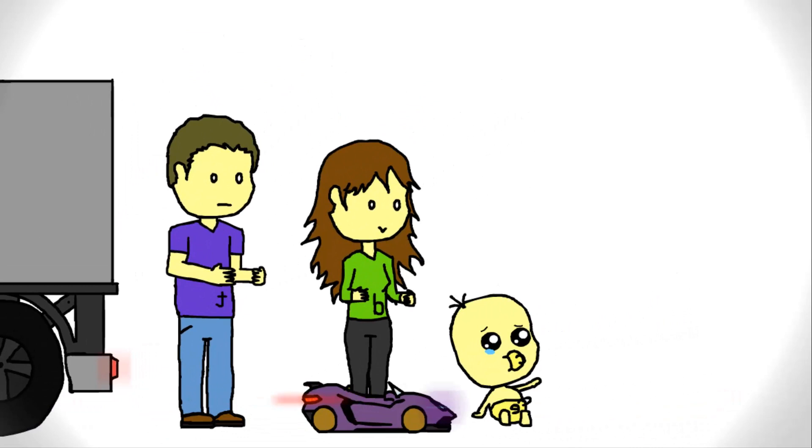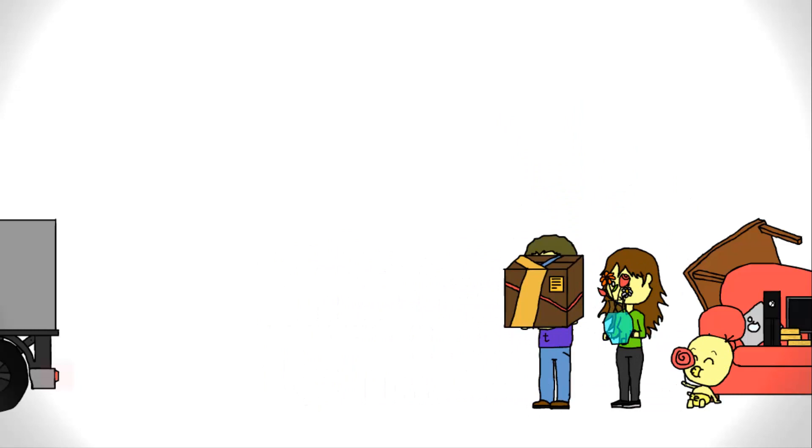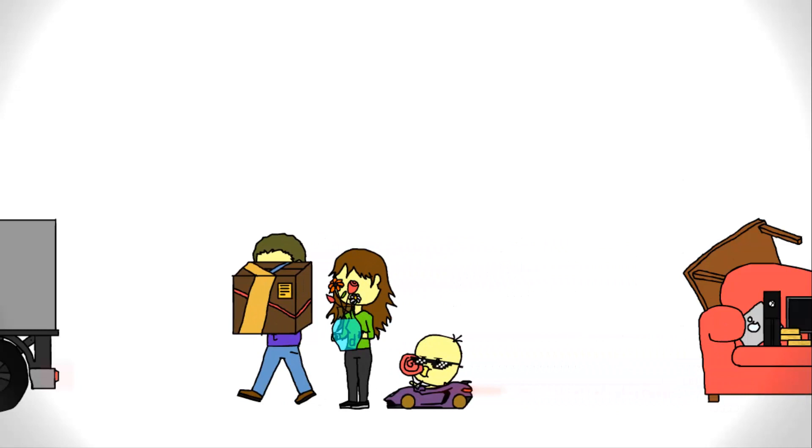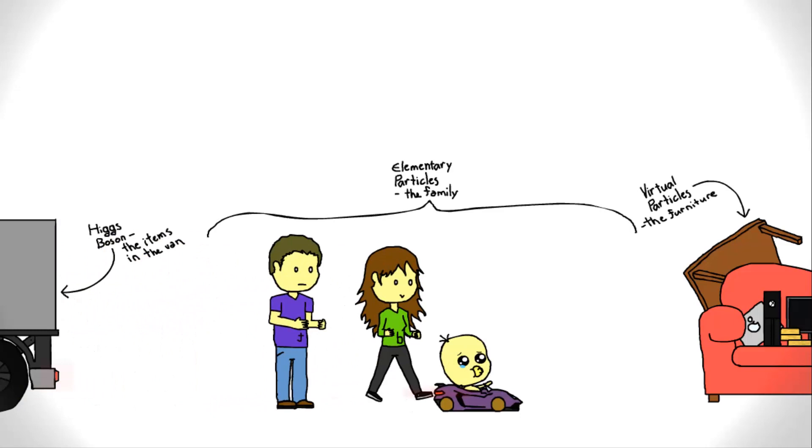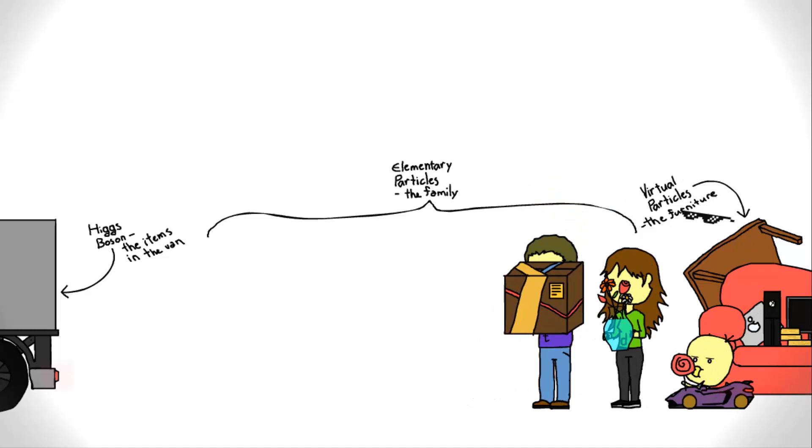But once the family starts to move, some members of the family have carried more weight than others. The furniture that is to be moved are the virtual particles of the Higgs field. The members of the family are the elementary particles. In this analogy, the dad would probably carry more than the toddler. Therefore, in a particle sense, he would have more mass.